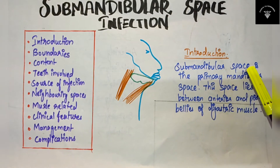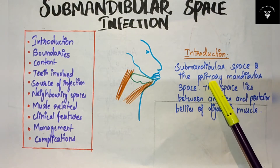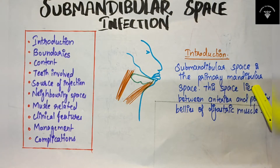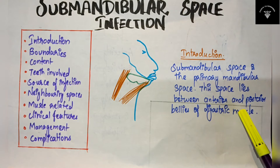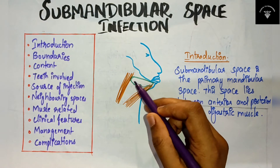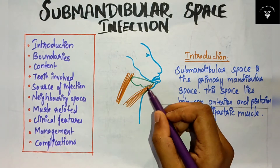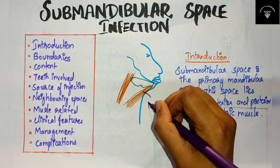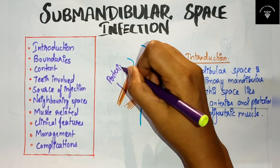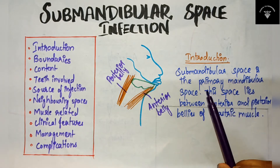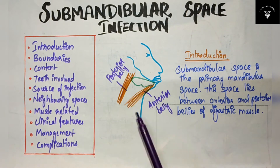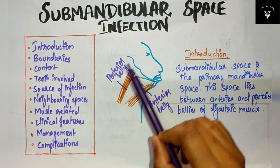The submandibular space is a primary mandibular space. As we already saw in the classification — check out my previous video — this is the space which lies between the anterior and posterior bellies of the digastric muscle. You just have to remember where the submandibular space lies: between the anterior belly and posterior belly of the digastric muscle. It's very simple.